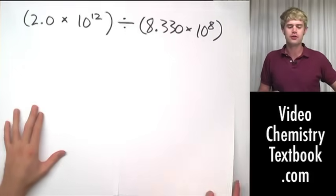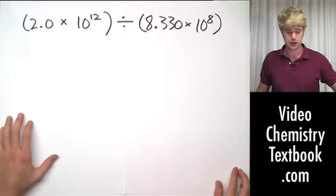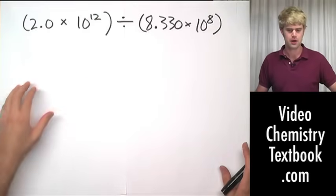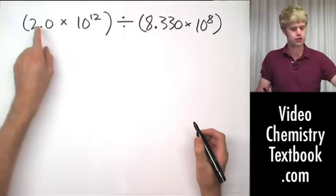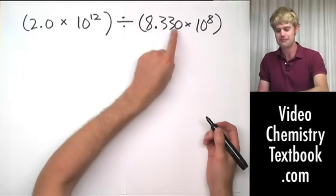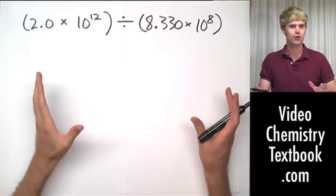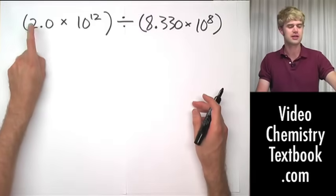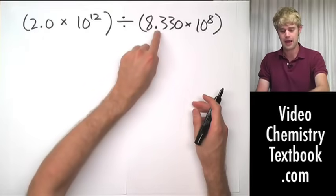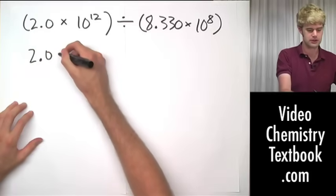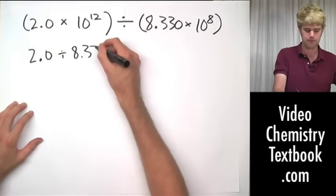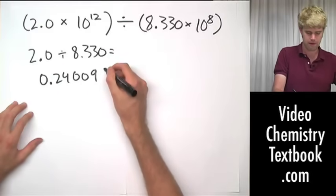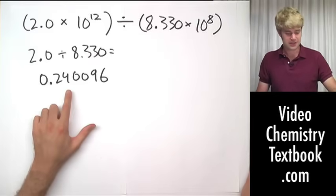Let's take a look at how we do some math problems with significant figures in scientific notation. Here's a division problem — we do division and multiplication the same way. We have 2.0 times 10 to the 12th divided by 8.33 times 10 to the 8th. The first thing we want to do is break this problem into two smaller problems. We're going to take 2.0 and divide it by 8.330. When I do that math, I get 0.240096.